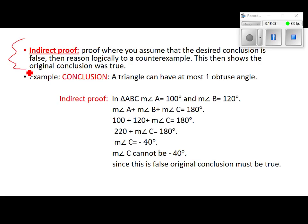Indirect proofs: an indirect proof is a proof where you assume — listen closely because you're going to be confused about this — you assume that the desired outcome is false. So we make a statement and we're trying to prove that statement, but we can't really prove it because it would take too much. So we turn it around and make the opposite of that statement, then we prove the opposite.